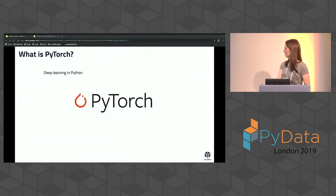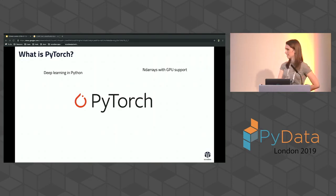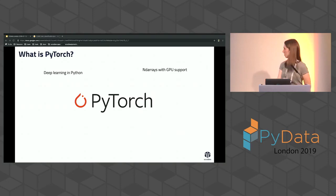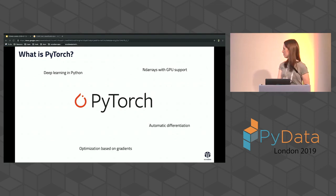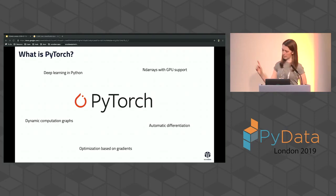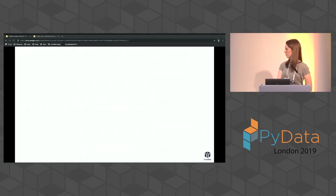PyTorch is a deep learning library in Python. You can think of it as ND arrays with GPU support — ND arrays being like NumPy. It looks a lot like NumPy arrays, but you can do gradients on them. It does automatic differentiation and optimization and has these dynamic computation graphs.